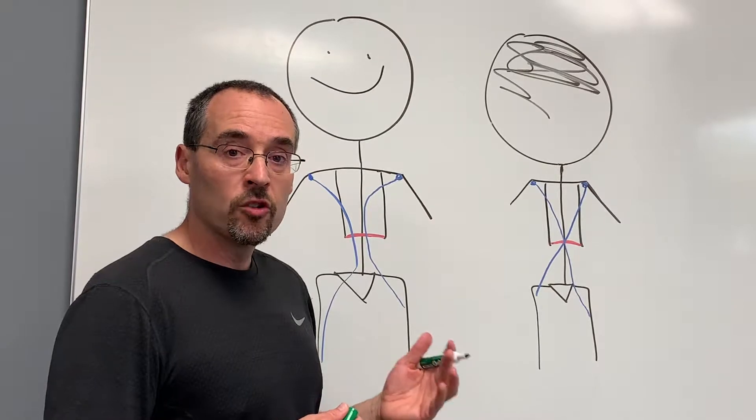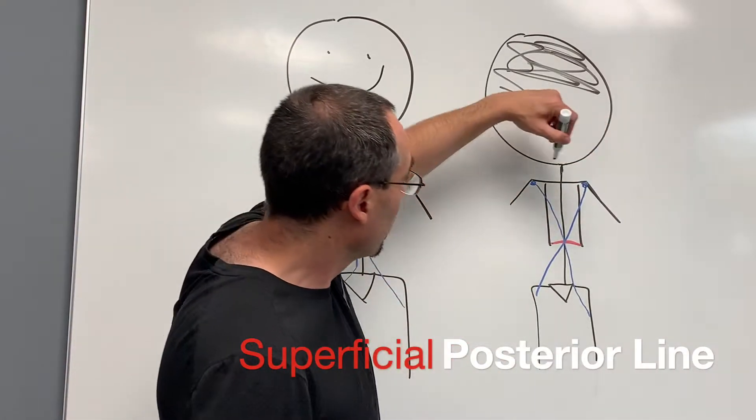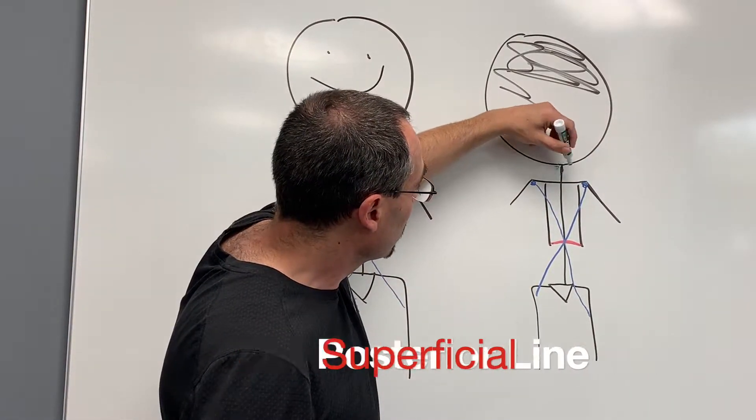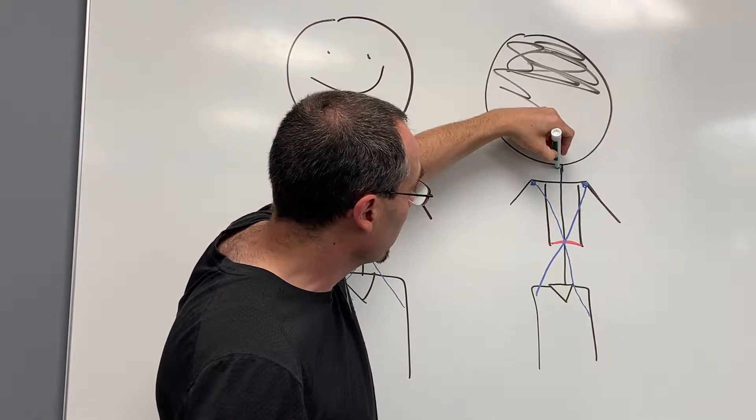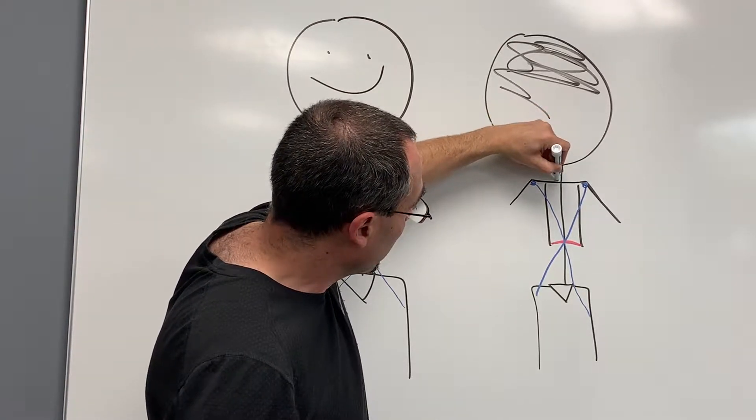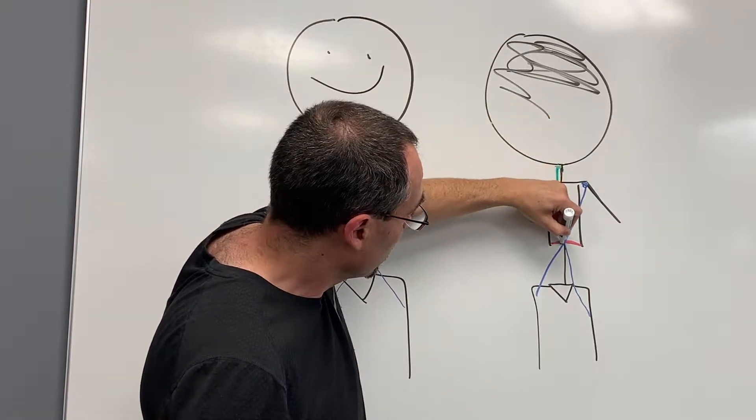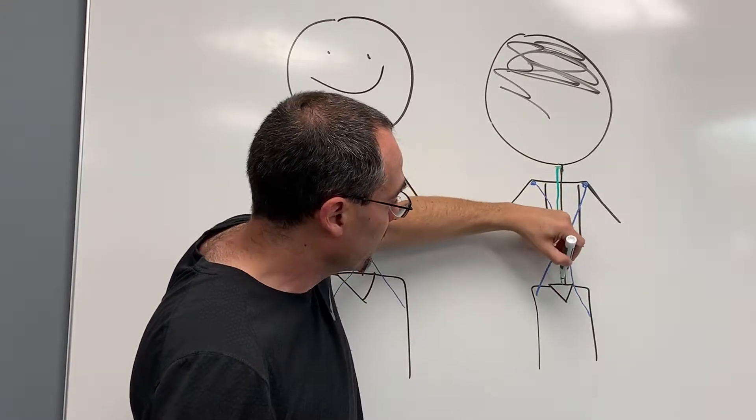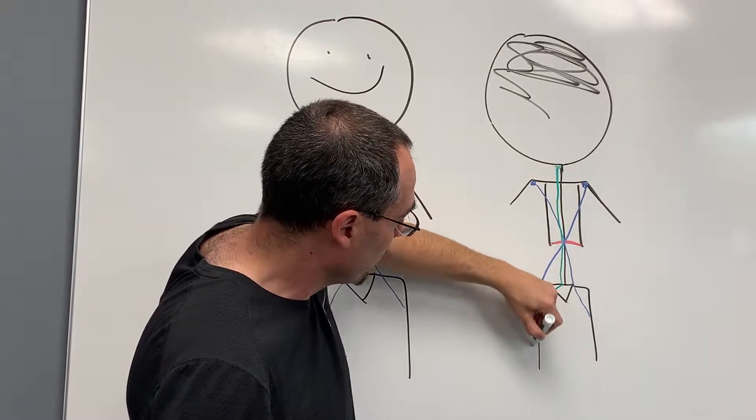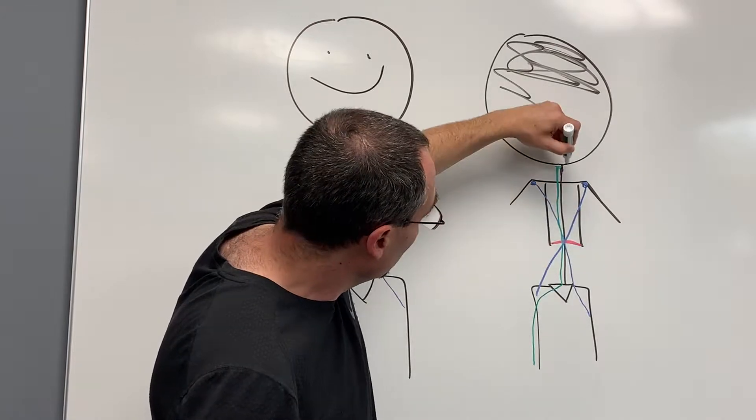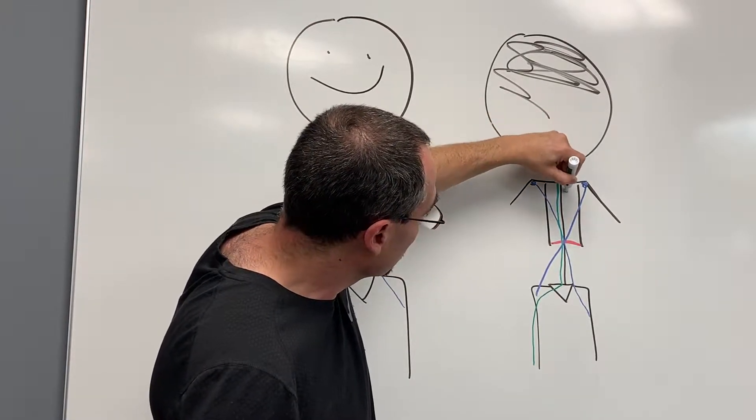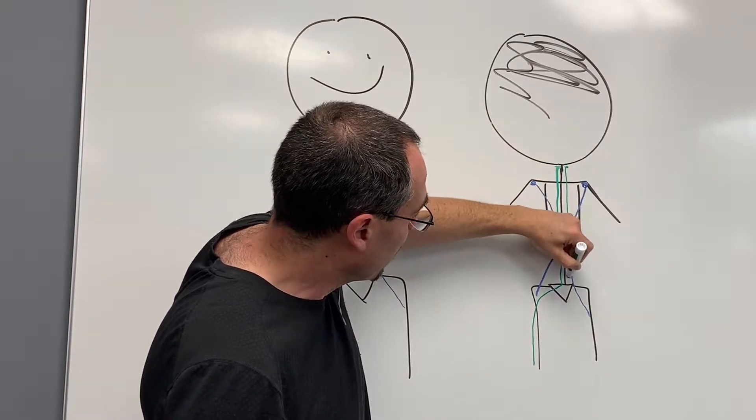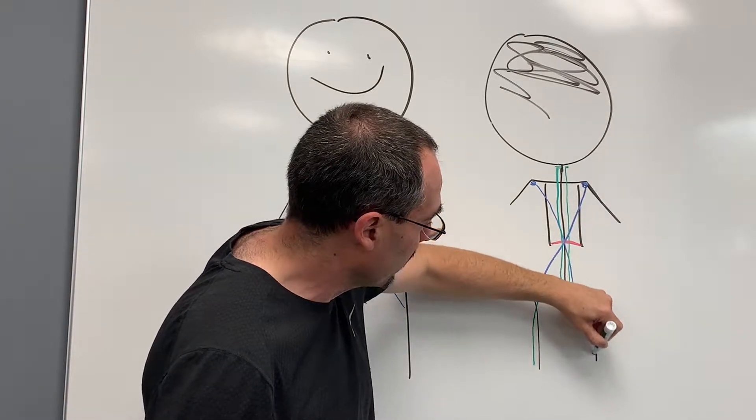Then we have the third one, the superficial posterior chain, which starts here. I'm just going to put it on the side of the spine to make it easier to see. And it goes down the spine, and then when it hits the sacrum it splits off to go down the leg. And I'll do it on this side too just to represent how it envelops the spine, goes down the leg.